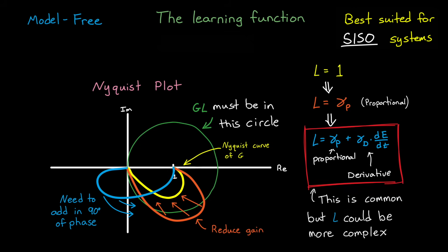Now this learning function is pretty common, but we could make it more complex by adding in higher order derivative terms, or really anything we need to keep the learning process stable for whichever system we need to control.